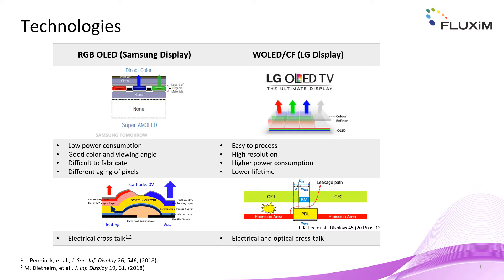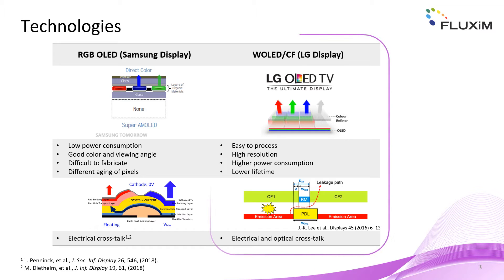The RGB OLED display can suffer from electrical crosstalk due to current leakage through common layers. In white OLED color filter displays this effect can also occur. Additionally, this type of device can also suffer from optical crosstalk if light from one pixel is leaking through the color filter of an adjacent pixel. Today we will focus on the white OLED plus color filter application and analyze quantitatively both electrical and optical crosstalk using electro-optical simulations.